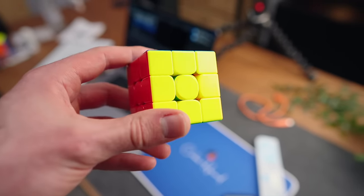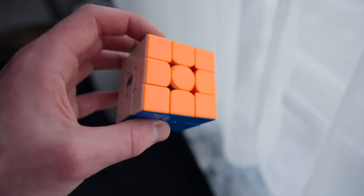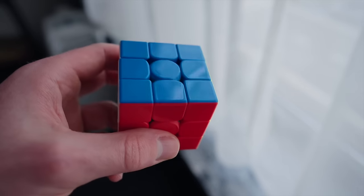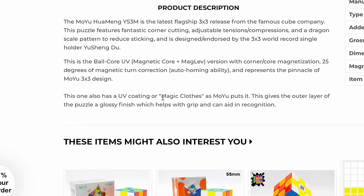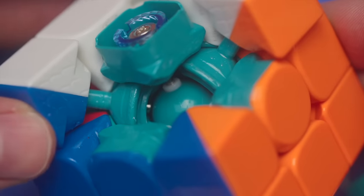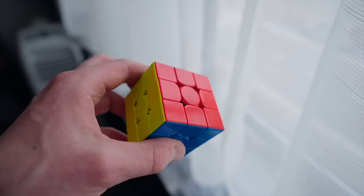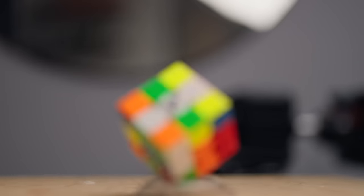And the last new feature is UV coating. If you look at the cube, you'll notice that this cube is super glossy. That's because this cube has a special coating, which Moyu calls magic clothes, but we all know is just UV coating. So a ball core, maglev, as well as UV coating, all combined in one cube.